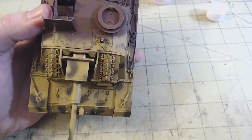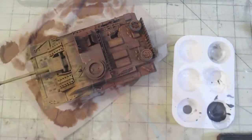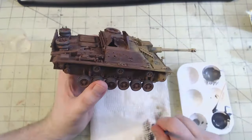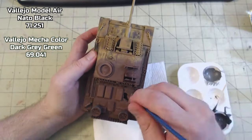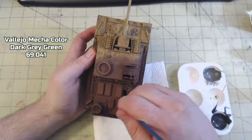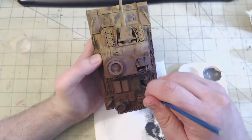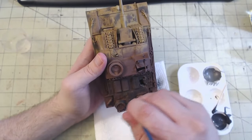Once I was happy with the chipping, the entire model was given another coating of the mahogany brown wash. The wash was left to dry, and then I came in with a mix of nato black 71.251 and mechacolor dark grey green 79.041 and dry brushed in a bunch of soot. This was centered around areas where the fire would be directly, as well as the other damaged portions of the AFV.